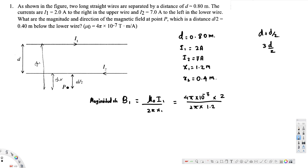Simplifying, we get 4π × 10⁻⁷ × 2 divided by 2π × 1.2, which gives 4 × 10⁻⁷ divided by 1.2. That equals 3.3 × 10⁻⁷ tesla, or 0.33 microtesla. This is the magnitude of the magnetic field B1 produced by the i1 current.